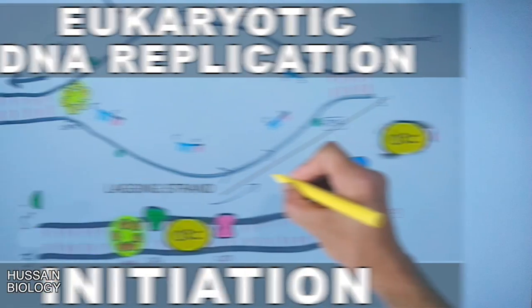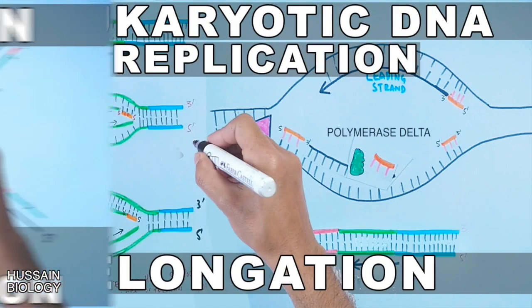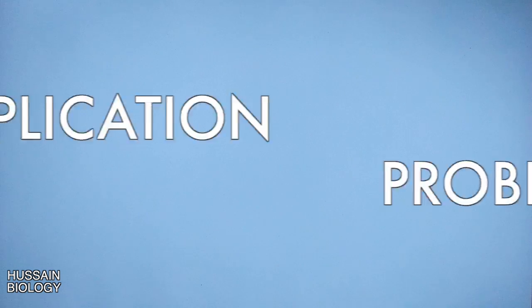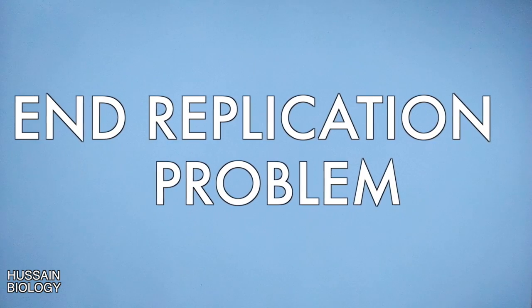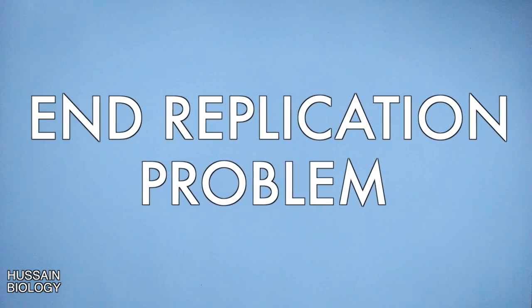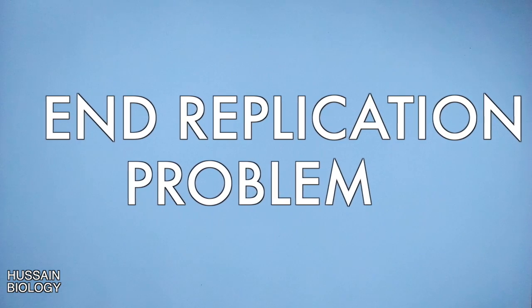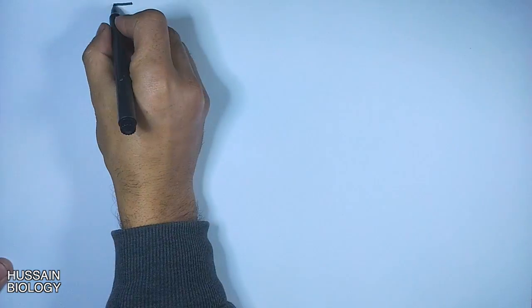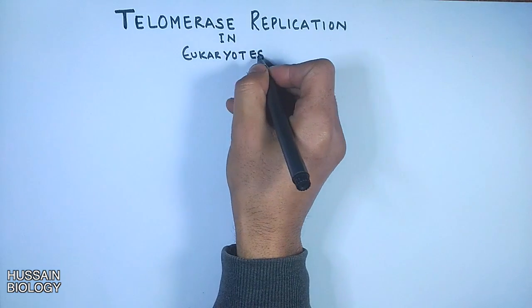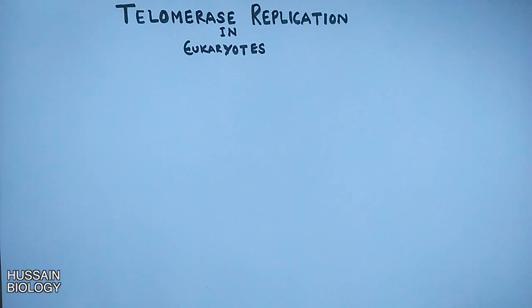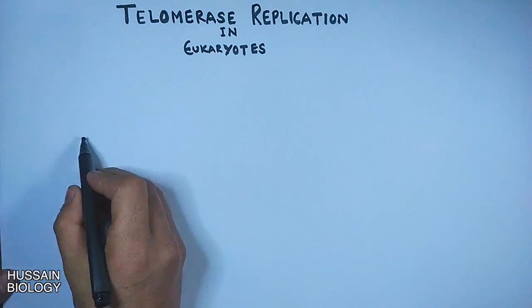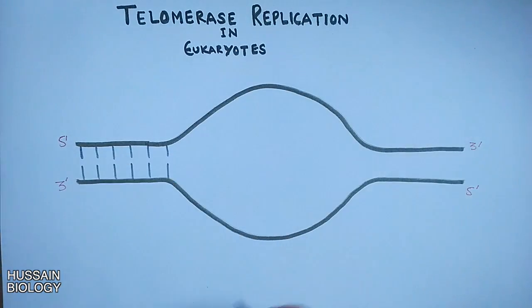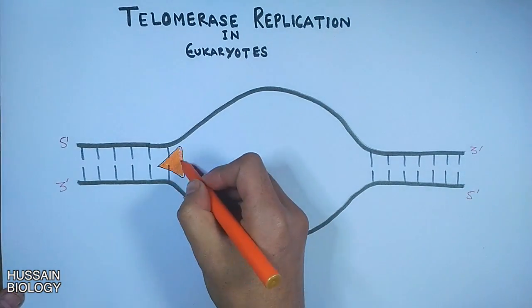In this series of videos we have been discussing eukaryotic DNA replication. Of all these types of DNA replication, we have to deal with the end replication problem, which occurs at the end of the DNA strand. This problem is dealt with by another process called telomerase replication in eukaryotes, which we are going to discuss today. To understand telomerase replication, we see we have a DNA molecule unwound into a replication bubble by the helicase enzyme.